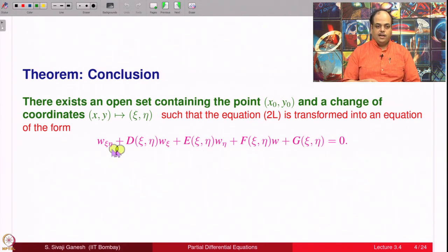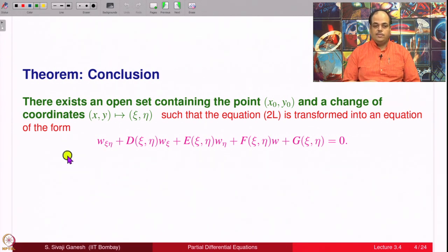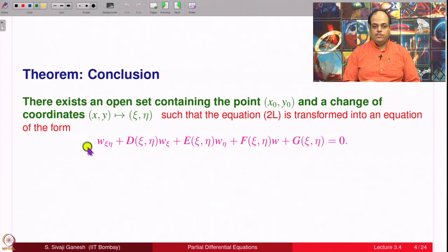If you compare with the equation from the last lecture after change of variables, we had ā, b̄, c̄. What is missing is ā and c̄ — they are 0, and b̄ equals one-half because 2b̄ appeared, so that equals one-half. Therefore the coefficient of w_ξη is 1, and w_ξξ and w_ηη do not appear in the equation.